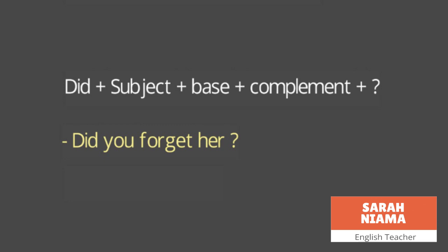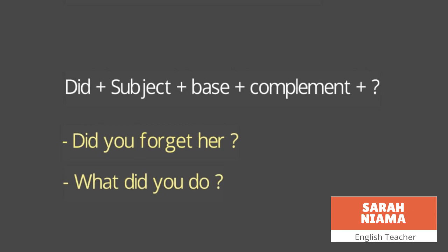In 'Did you forget her?': 'did' is the auxiliary verb at the beginning, 'you' is the subject, 'forget' is the base verb, and 'her' is the complement, followed by a question mark. If we have a question word — like what, where, or when — we place it at the very beginning before the auxiliary verb. For example: 'What did you do?'